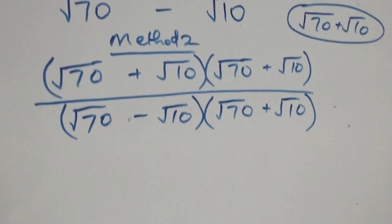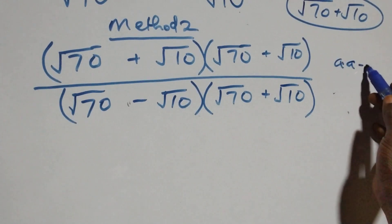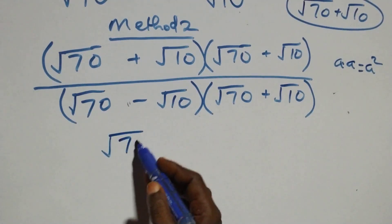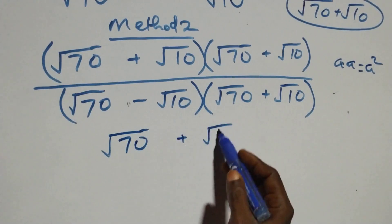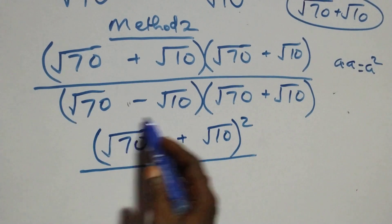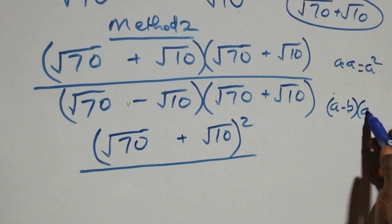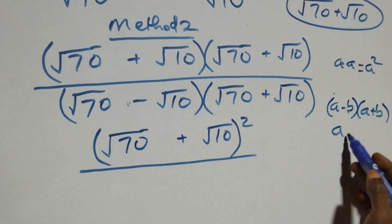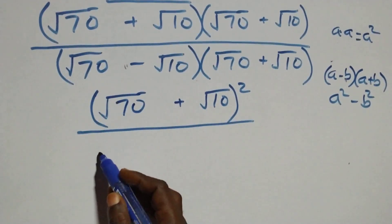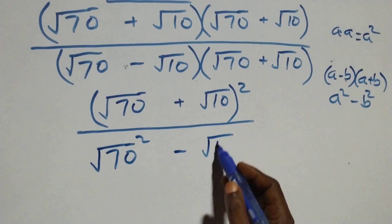When we have a times a, that is a squared. So the numerator is (√70 + √10) all squared. For the denominator, (a − b)(a + b) = a² − b², the difference of two squares. So the denominator is (√70)² − (√10)², which equals 70 − 10.